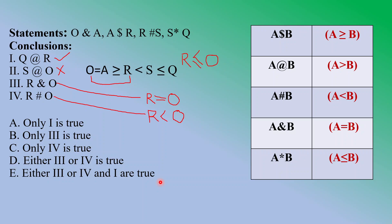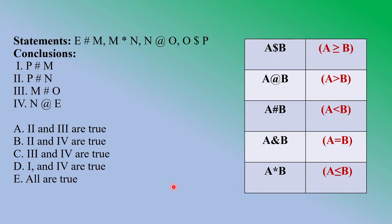Let's check the answer — we got the correct answer. Now let's proceed to the next question. Let's first decode this: e# m — hashtag means smaller than — so e is smaller than m. m* n — asterisk means smaller than or equal to — so m is smaller than or equal to n.